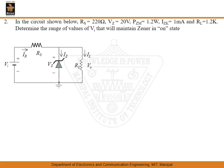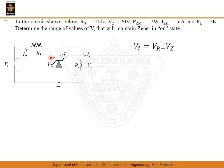Here is a problem on line regulation where we find the range of input voltage that keeps the Zener diode in the ON state. The state of the Zener diode — whether ON or OFF — is decided by both the input voltage and the load resistance. VI equals VR plus VZ: the applied voltage splits across the series resistance RS and the Zener diode. We set VIN such that the Zener is ON, maintaining a constant voltage of VZ.